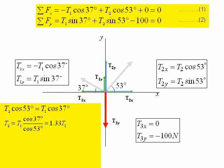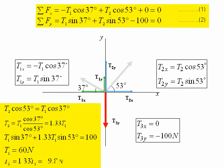Substituting into equation 2, we have T1 sin 37 degrees plus 1.33 T1 sin 53 degrees is equal to 100. And it follows that T1 is equal to 60 newtons. T2 is just equal to 1.33 T1, which is equal to 79.8 newtons.